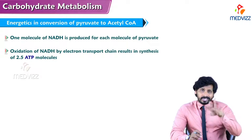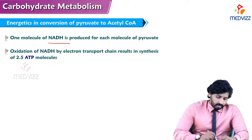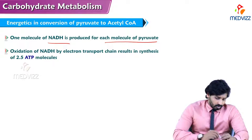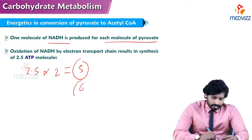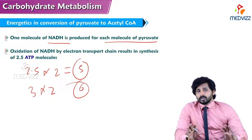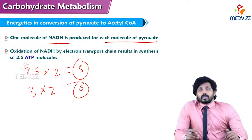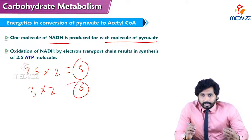Regarding the energetics of oxidative decarboxylation: one NADH is produced per molecule of pyruvate. Since two pyruvates are generated from glycolysis, two NADH are produced, yielding 2.5 × 2 = 5 ATPs by the newer calculation, or 3 × 2 = 6 ATPs by the older calculation. This reaction therefore produces a significant amount of energy. That's all about catabolic fates of pyruvate and the mechanism of oxidative decarboxylation. Thank you for listening.